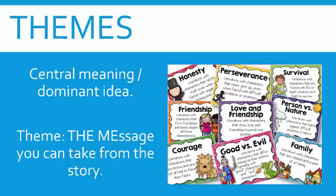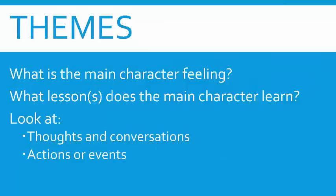Now we go into the analysis with themes. A theme is the central meaning or the dominant idea in any piece of prose or writing — it's the message you can take away from the story. Some common themes are perseverance, survival, good versus evil, friendship, and so on. When you determine a theme, ask what the main character is feeling, and what lesson or lessons does the main character learn. You can look at thoughts, conversations, actions, and events throughout.